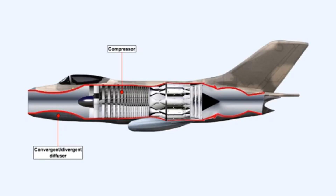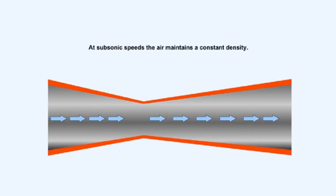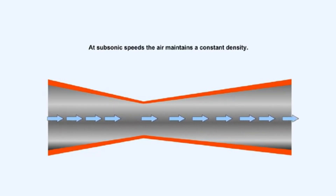This diagram shows a simple convergent-divergent diffuser. This design works because supersonic flow will slow down as it enters a constricted area — the opposite response to that which happens with subsonic flow. Air flowing at subsonic speeds will accelerate through a constriction. We know from the previous lesson that subsonic airflow through a venturi accelerates towards the throat. At subsonic speeds the air maintains a constant density and as a result a pressure wave is set up which causes the air to accelerate through the constriction.